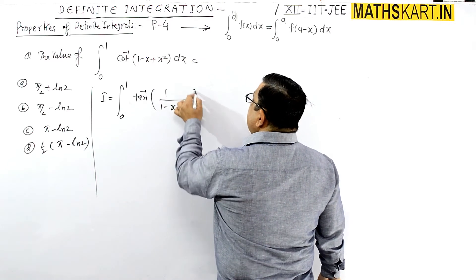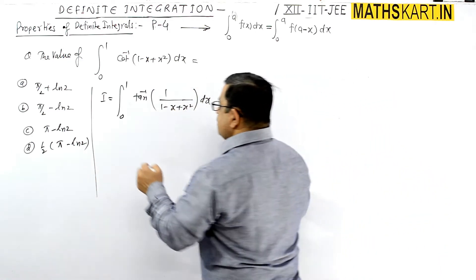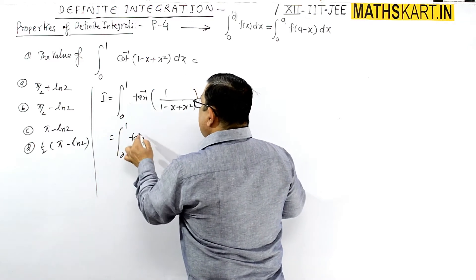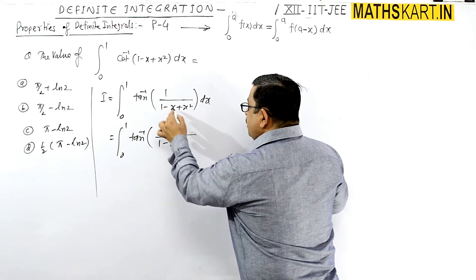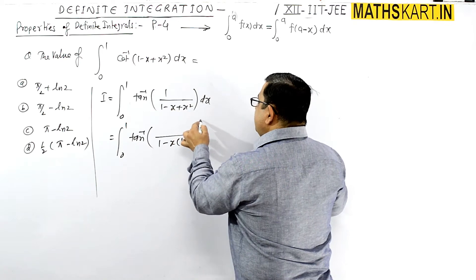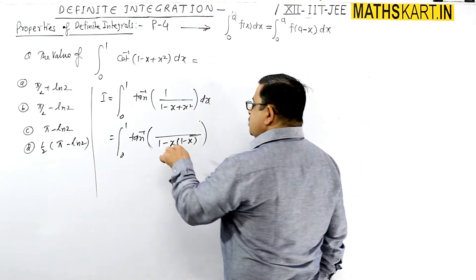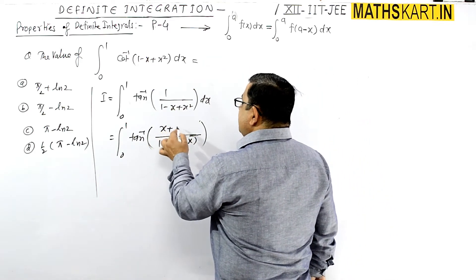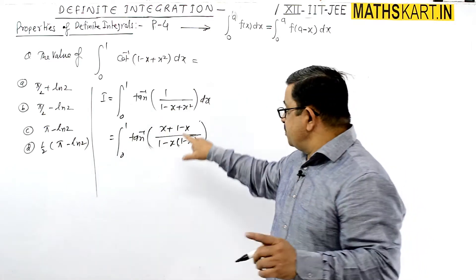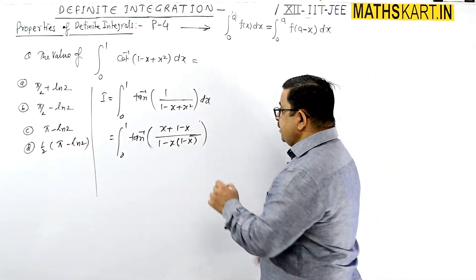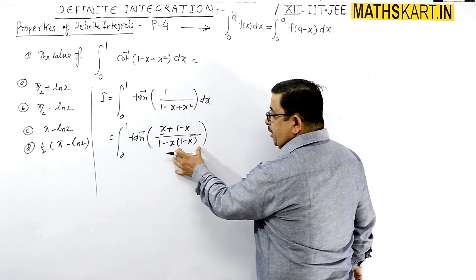Here we need to do a little manipulation to make it easier. We take tan inverse of the expression, taking (1 minus x) as a common factor in the denominator. The denominator becomes (1 minus x) times (1 minus x) leaving x, and in the numerator in place of 1 you can write x plus (1 minus x).